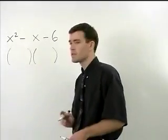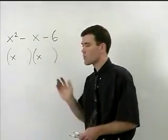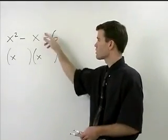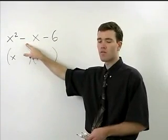X squared breaks down into X times X, and what we're looking for are factors of the constant term that add to the coefficient of the middle term.